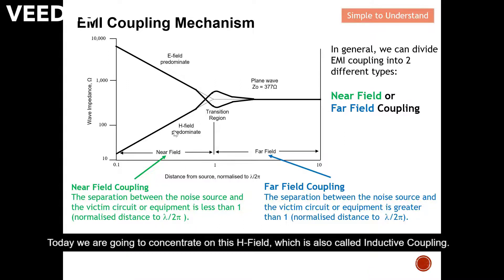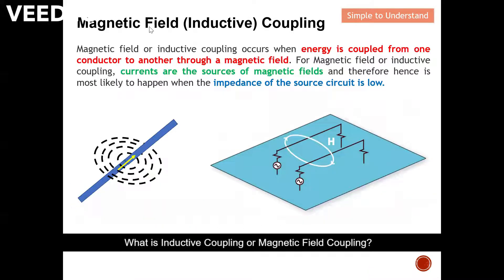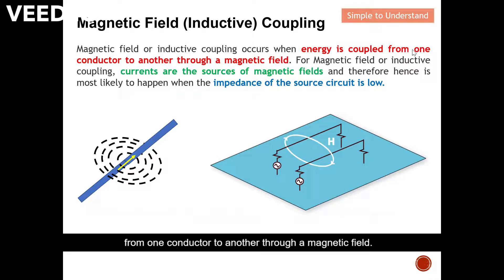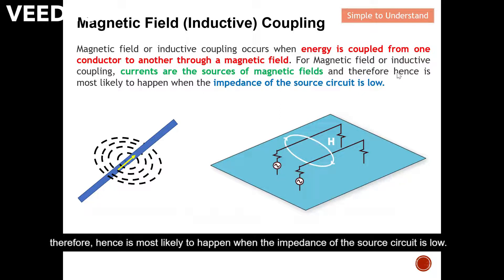This is also called inductive coupling. So what is inductive coupling or magnetic field coupling? Magnetic field or inductive coupling occurs when energy is coupled from one conductor to another through a magnetic field. For magnetic field or inductive coupling, current is the source of the magnetic field, and therefore it is most likely to happen when the impedance of the source circuit is low.